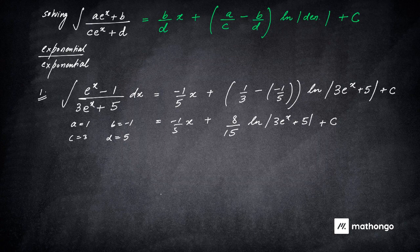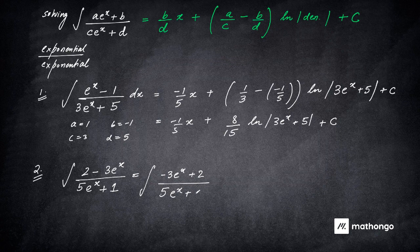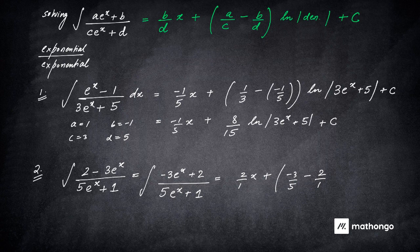This is how you use the exponential by exponential formula. For another problem, first express it in the form ax plus b before applying the trick, otherwise you will miss it. Please be very careful when applying shortcuts — they apply only for the specific form they were made for. Form is important. Once arranged, it is simply 2 by 1 times x plus (minus 3 by 5 minus 2 by 1) times ln of the denominator. Question over.